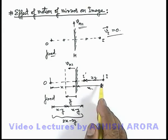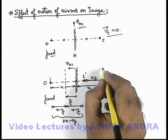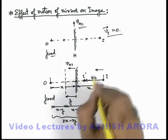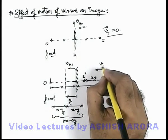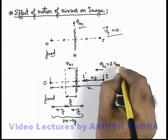So here we can see if mirror is moving at a velocity v-m perpendicular, then image will move in the same direction with the velocity v-i perpendicular which is equal to twice of v-m perpendicular.